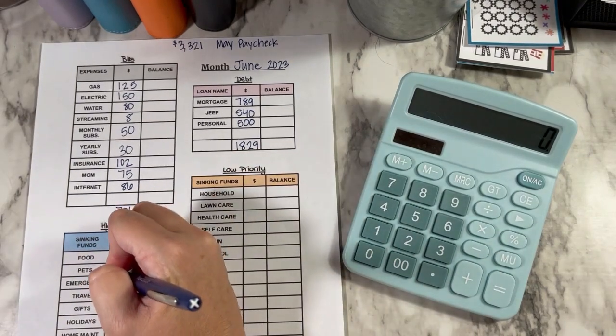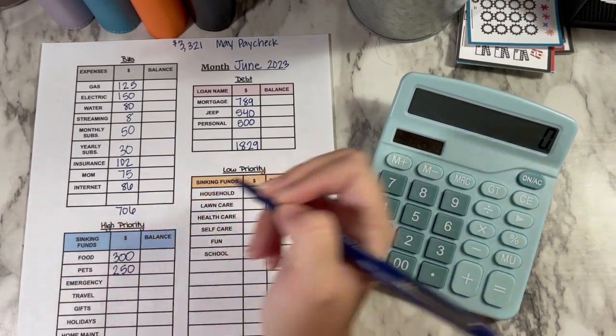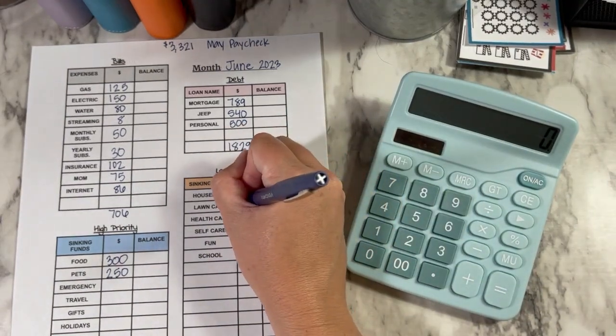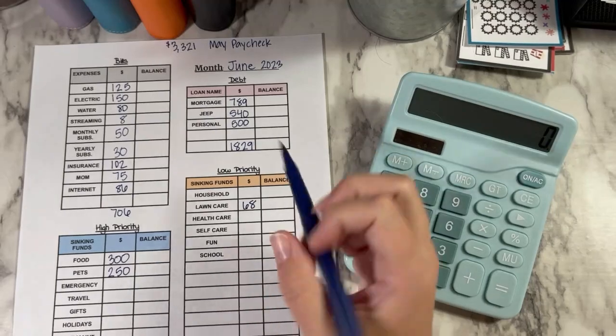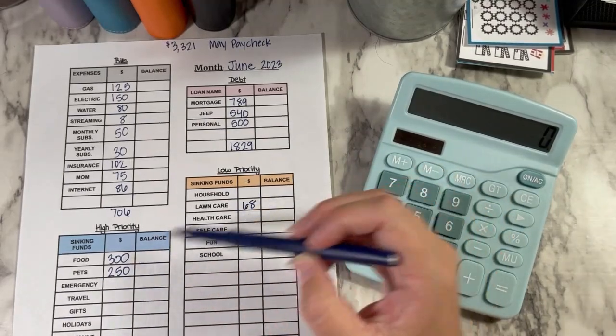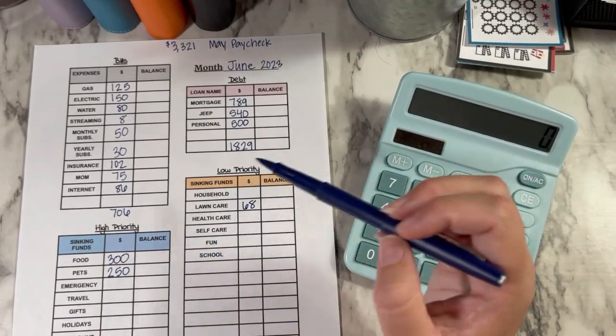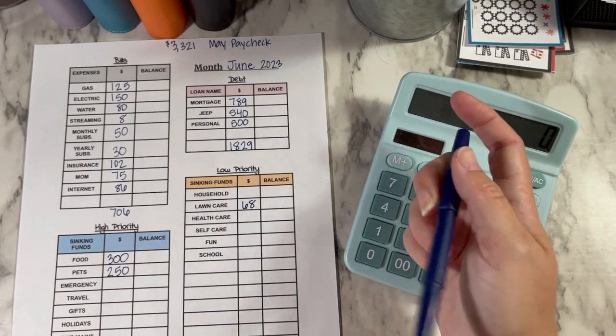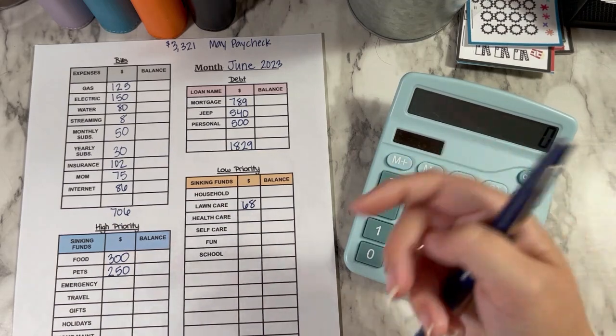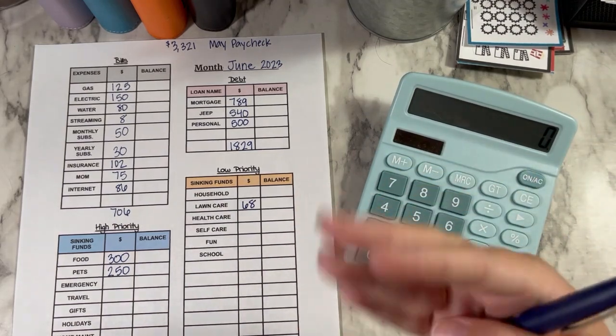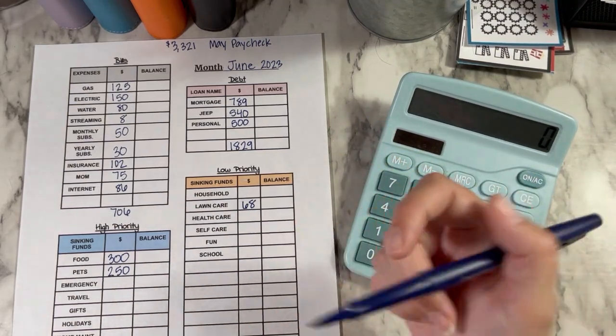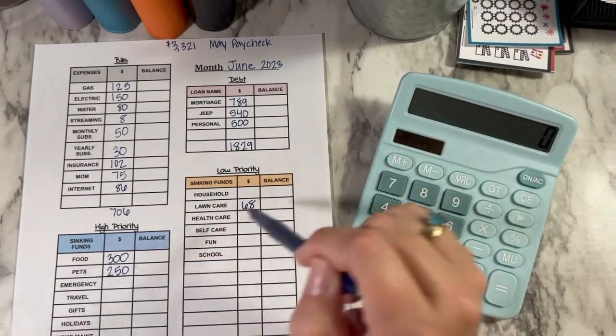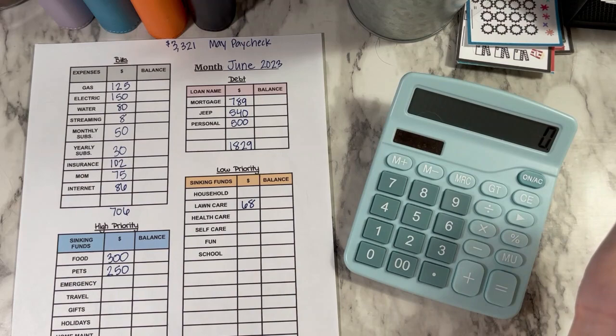And then pets is getting $250. And then lawn care is getting $68. So those three things are the things that I have to budget a specific amount every month. The rest of it that's blank are things that I guess you would call sinking funds. So I'm adding to it all the time. And then if I need it, I can pull it out.